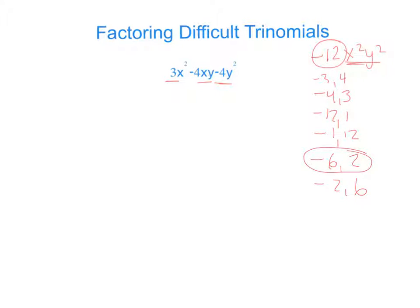And we notice that negative 6, 2 is the one that works. So we are going to split our middle term into negative 6xy plus 2xy. So we're doing it just like foolproof. The only difference is we have x, y in the middle instead of just an x. And we have x and y in the middle because those were the variables assigned to this problem.